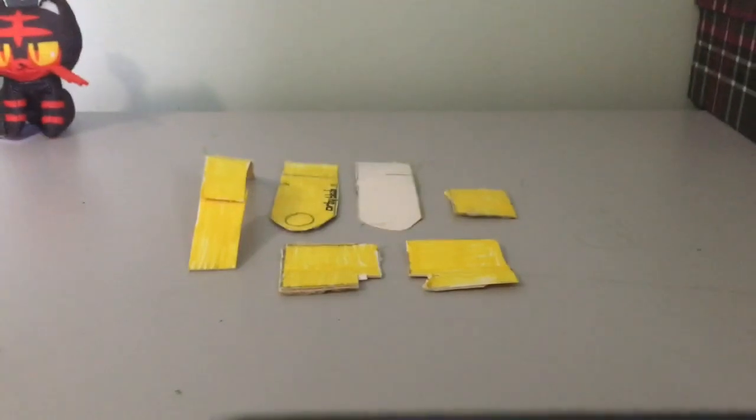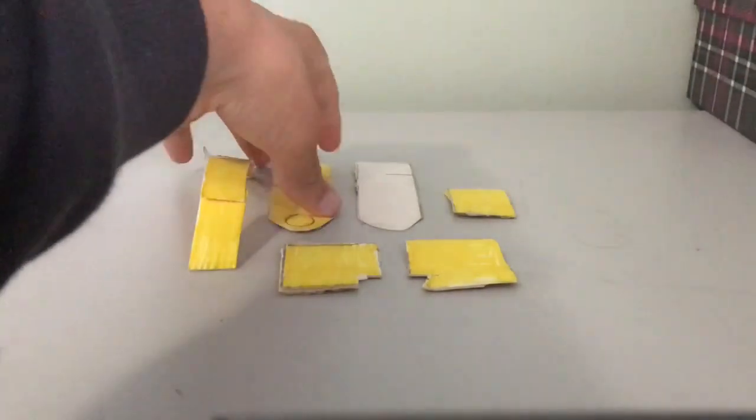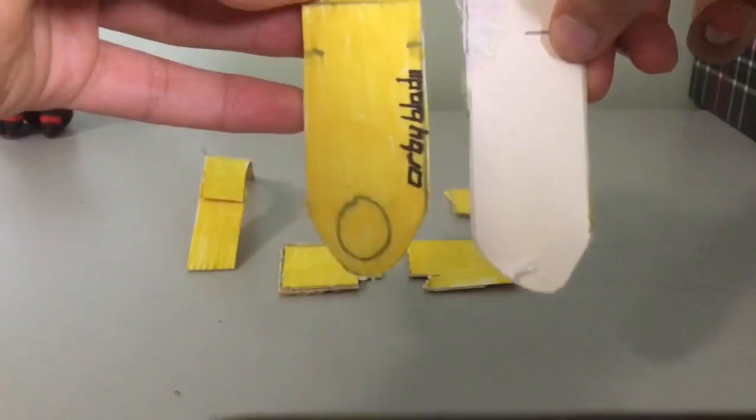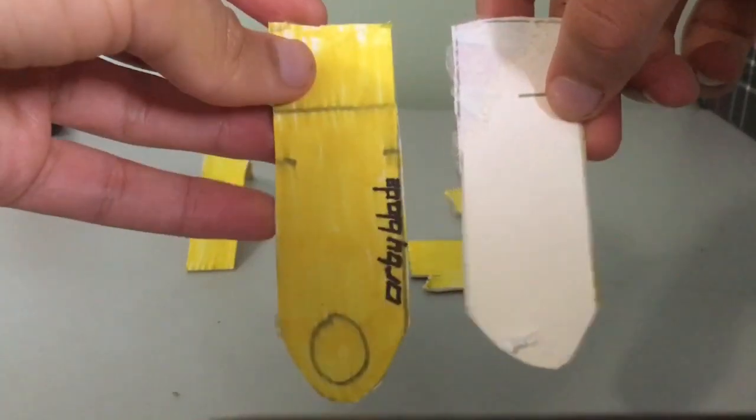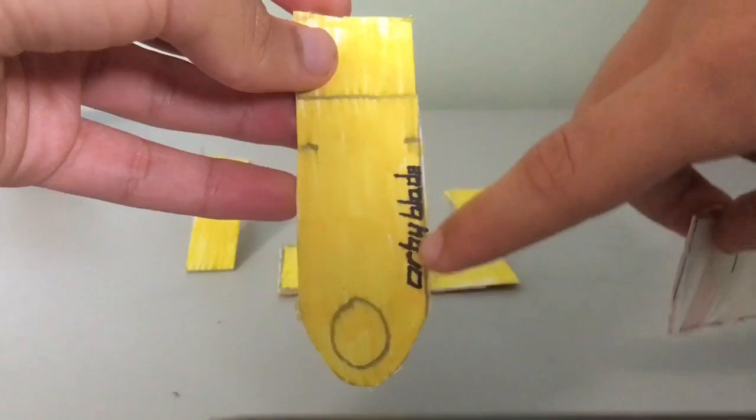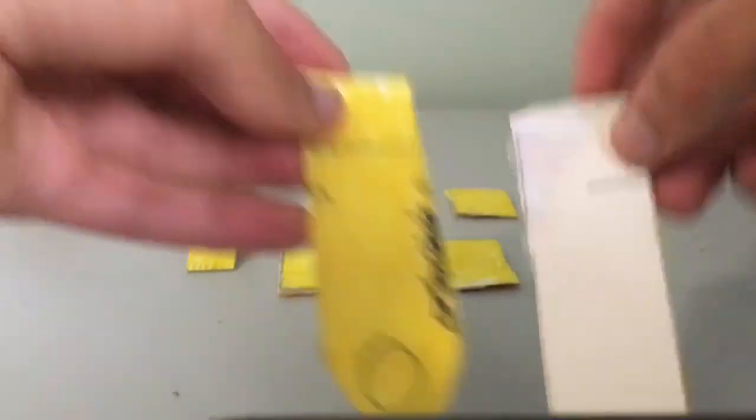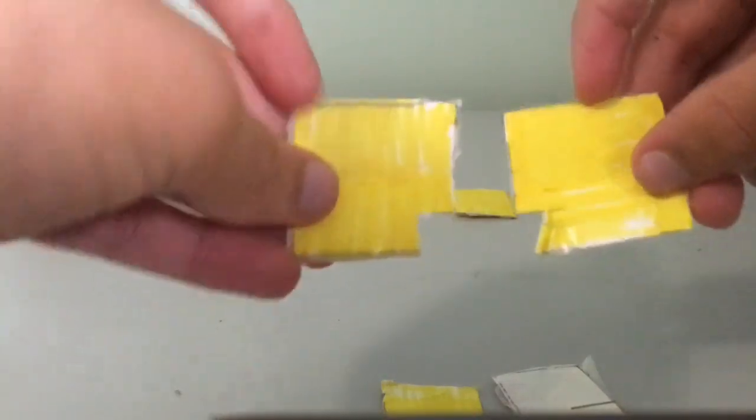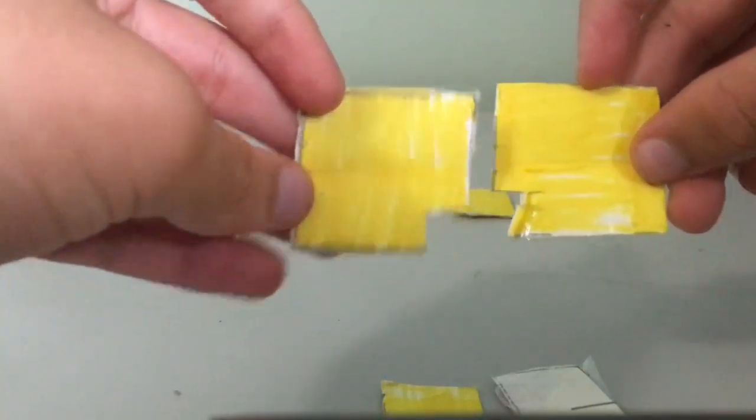I've already drawn them all out and cut them here. So we've got the top and bottom panel. I only colored the top panel because no one really sees the bottom panel anyway. It's got the ORBY Blade writing there, and the circle as well. The internal sides are going to have to be yellow. Make sure that they're facing opposite like this.